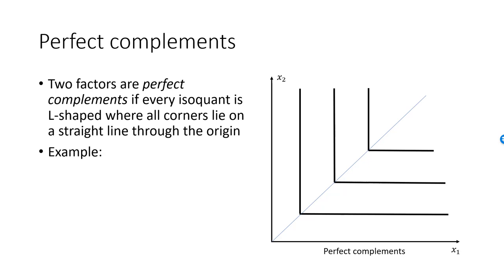You can produce one red wire from one copper cable and one electronic circuit. Copper cables and electronic circuits are perfect complements in the production of red wires.